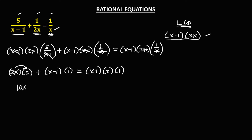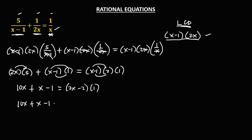Then simplify: multiply, this is 10x, then plus, so that's x, then minus 1 equals, so this is 2x, then negative 2, times 1. So this becomes 10x plus x minus 1 equals 2x minus 2. Then combine all terms with x, so transpose this 2x.